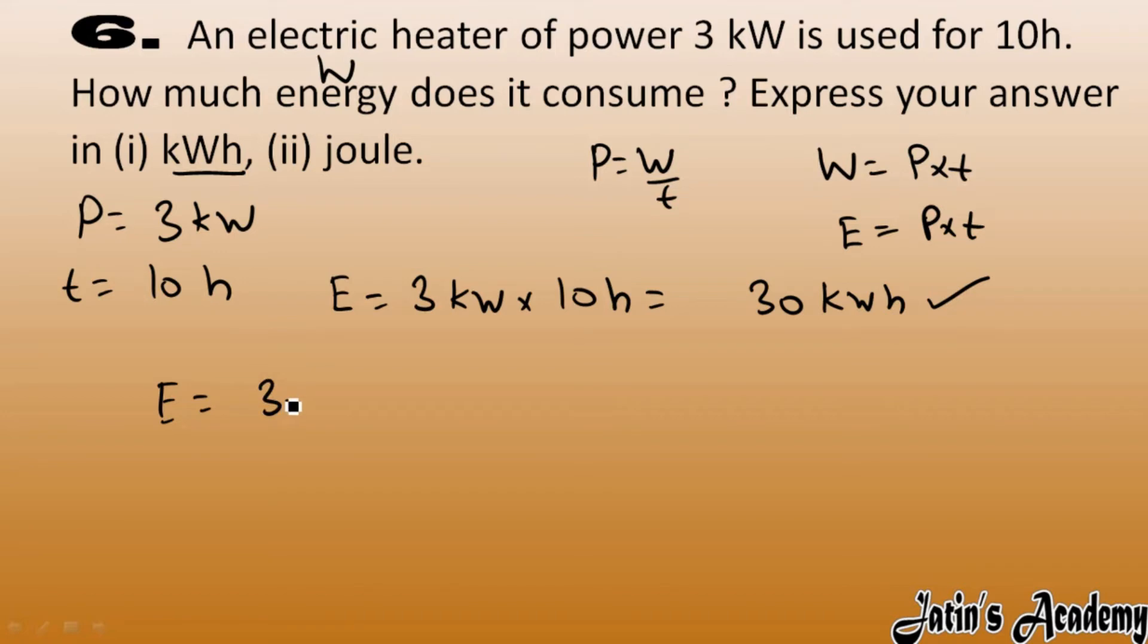Converting this 30 kilowatt hour, I am writing 30 into 1 kilowatt hour. And in 1 kilowatt hour how many joules are there? Relationship we have directly: 3.6 into 10 raised to power 6 joule.